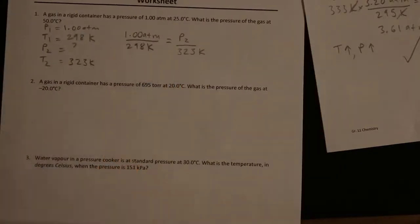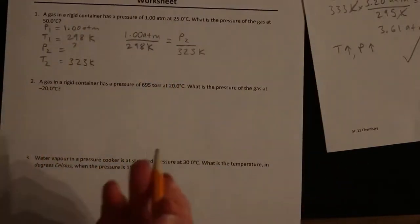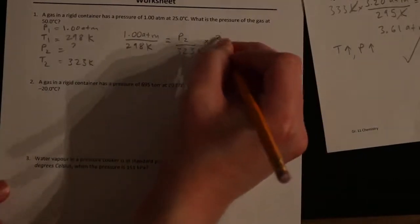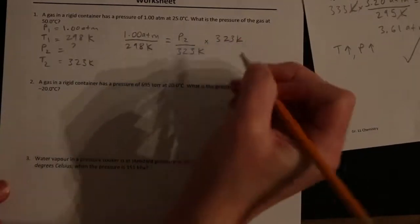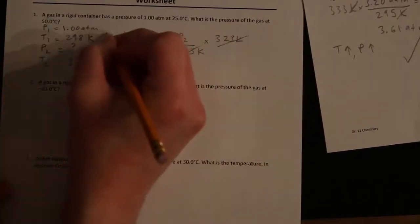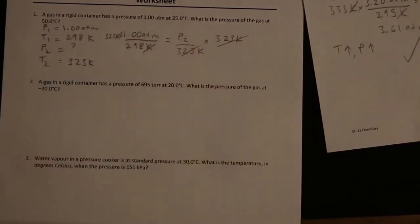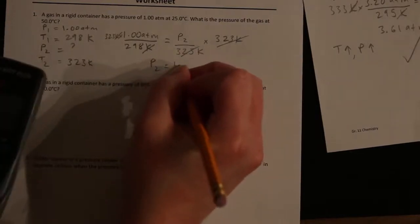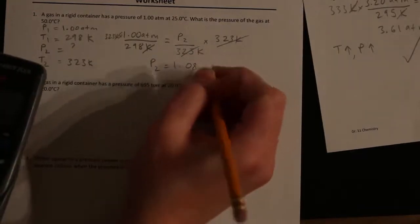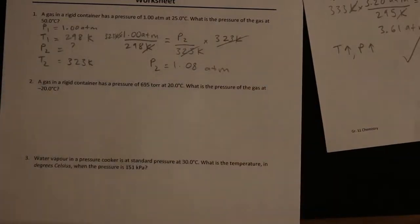What we want to find is on the top again. So we just multiply both sides by what's on the bottom here. 323 K. Kelvin cancels with Kelvin. So we enter that into our calculator as 323 multiplied by 1.00, divided by 298. The calculator says that P2 equals 1.08 atmospheres.